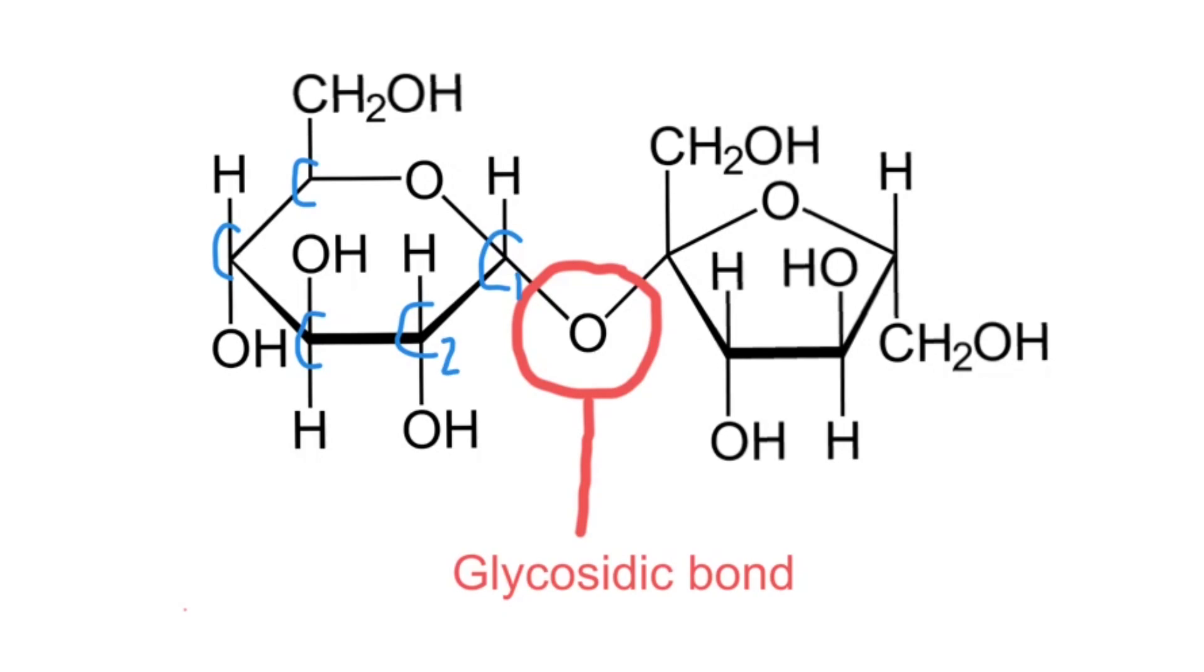They're called 1-4 glycosidic bonds because when we look at the glucose molecule, we can number off the six carbons within the molecule. And when we take a closer look at the glycosidic bond, it is carbon number 1 that is bonded to carbon number 4.